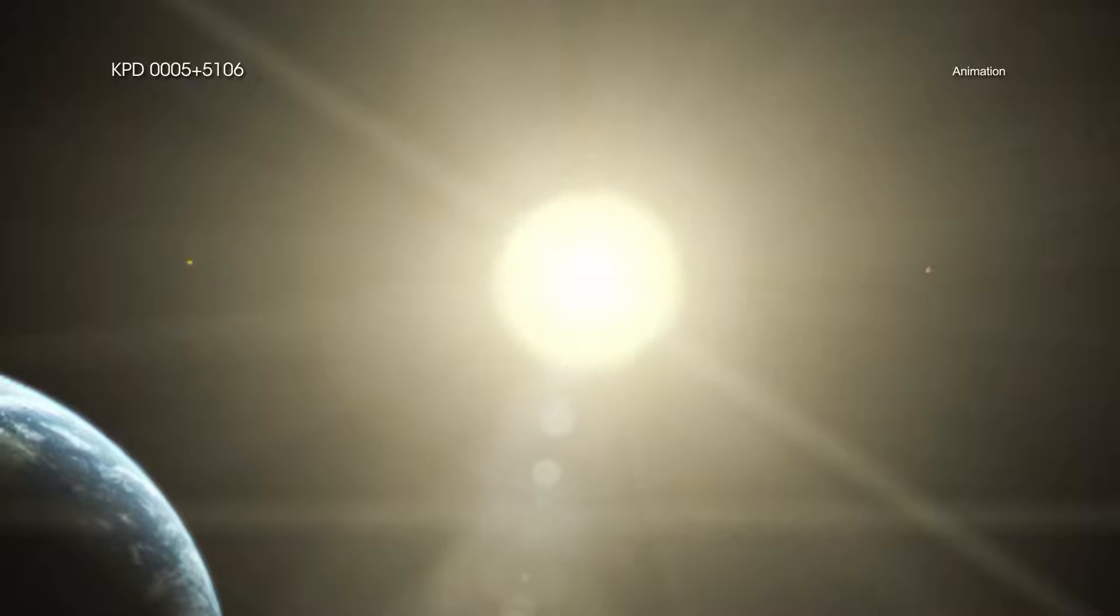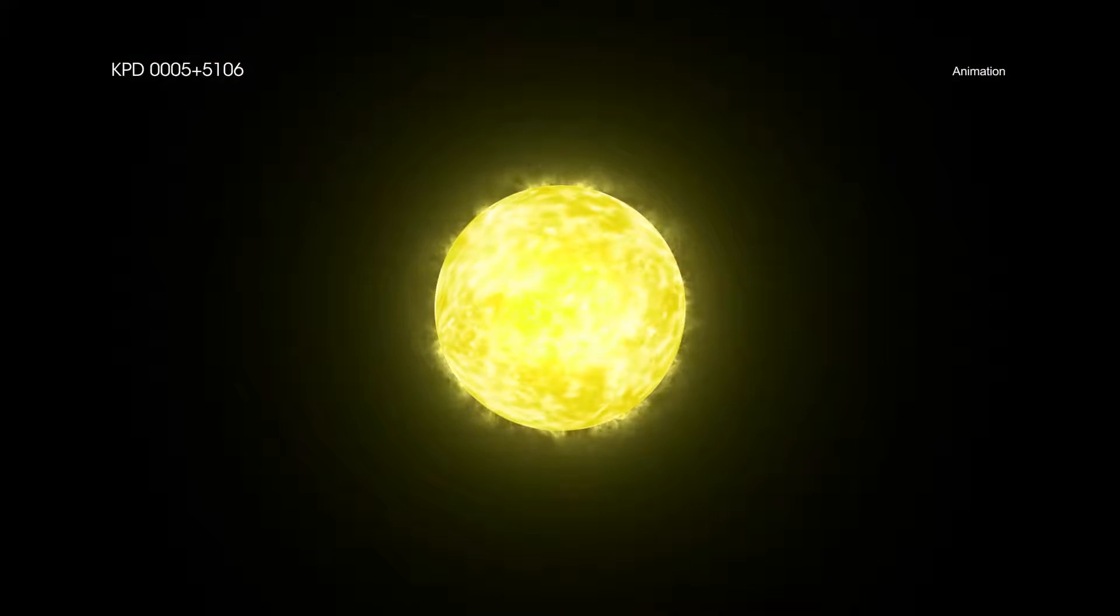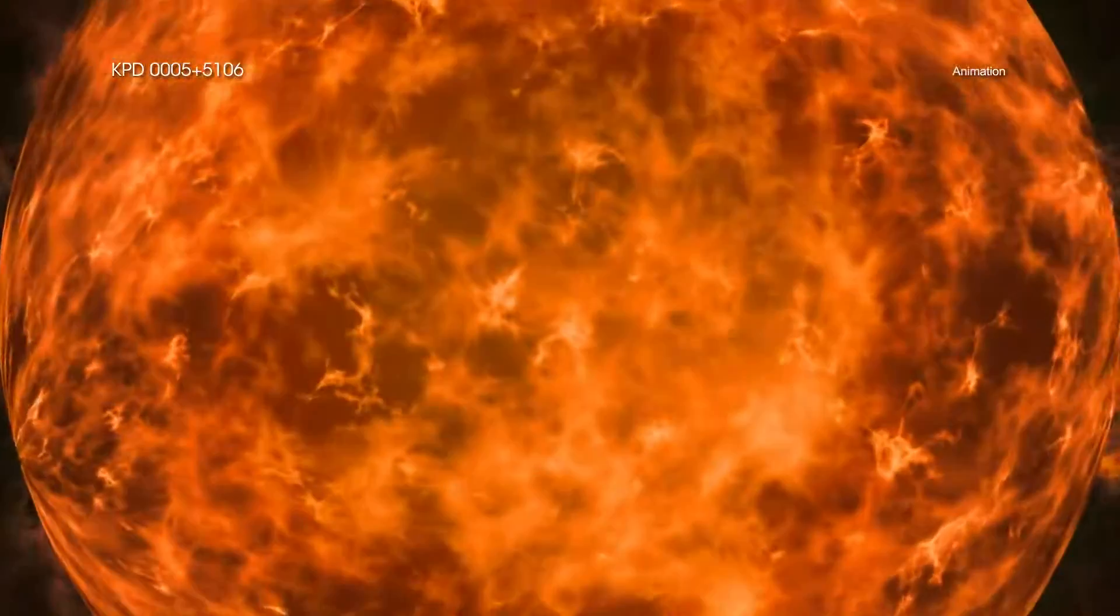Most stars, including the Sun, will become white dwarfs after they begin to run out of fuel, expand and cool into a red giant, and then lose their outer layers. This evolution leaves behind a stellar nub that slowly fades for billions of years.